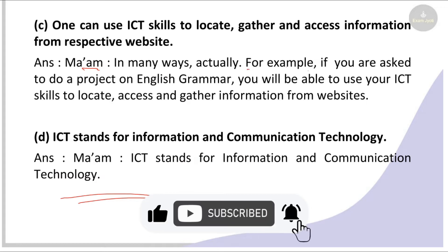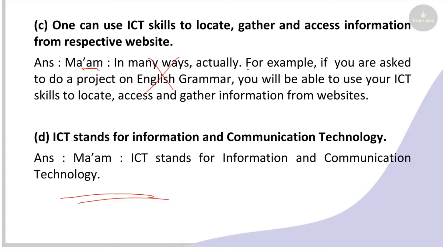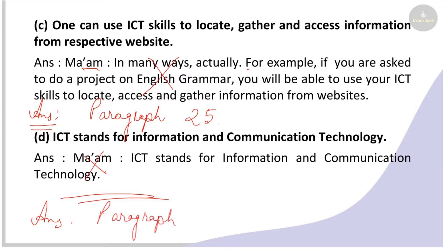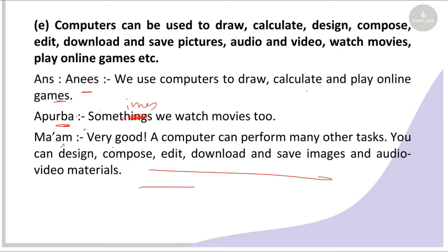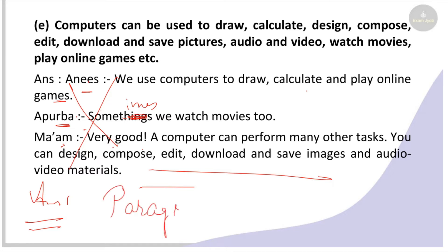Next: ICT is the use of information and computer technology — this is found in paragraph number 5. Next: a computer can be used to draw, calculate, design, compose, edit, download, and save pictures, audio, video, watch movies, play online games, etc. This information is in paragraphs 12, 13, and 14 — it is a 3-paragraph answer.